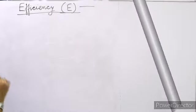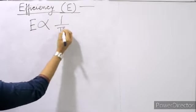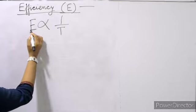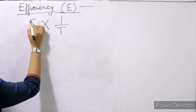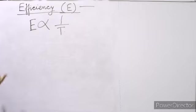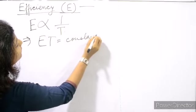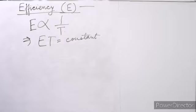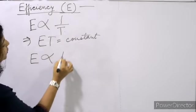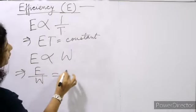Efficiency is the rate of doing work and efficiency is inversely proportional to the time taken. So e multiplied by t is some constant. More efficient people take less time to do the work, and less efficient people take more time. Efficiency is also directly proportional to work, so e upon w is equal to some constant.